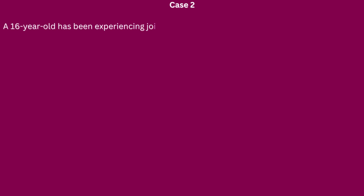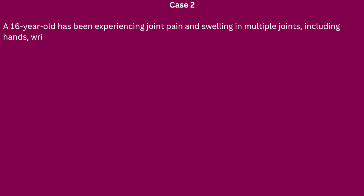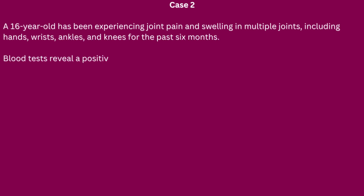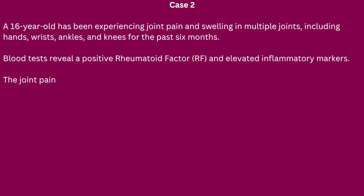Case number two. A 16-year-old has been experiencing joint pain and swelling in multiple joints, including hands, wrists, ankles, and knees, for the past six months. Blood tests reveal a positive rheumatoid factor and elevated inflammatory markers. The joint pain is symmetric and more severe in the morning.